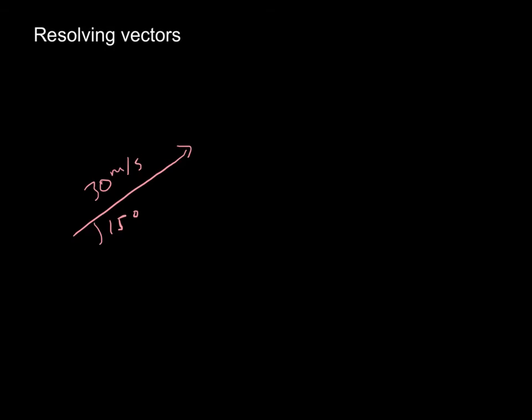We might want to be able to find our x component of that vector, is the word we use, and our y component. So that would be our y direction, our vertical direction, and x, our horizontal direction. I might need to know what's my velocity in the horizontal direction, what's my velocity in the vertical direction. That's actually going to be a big part of the problems that we work here in a little bit.